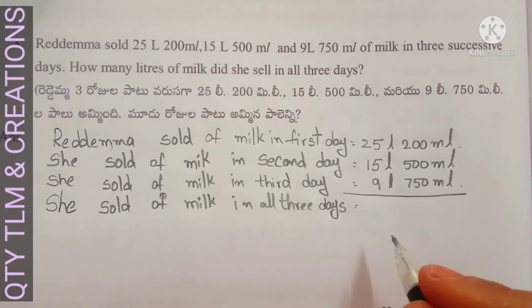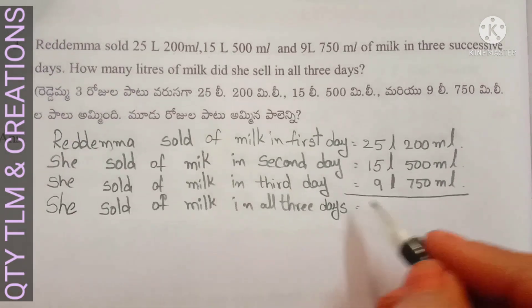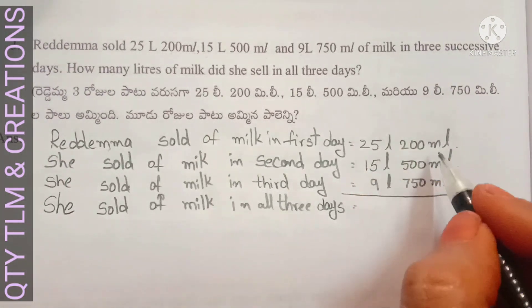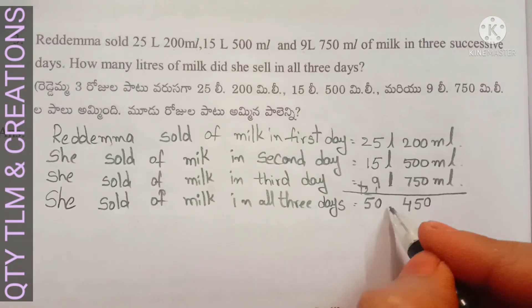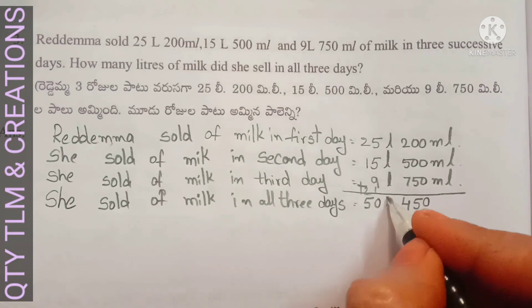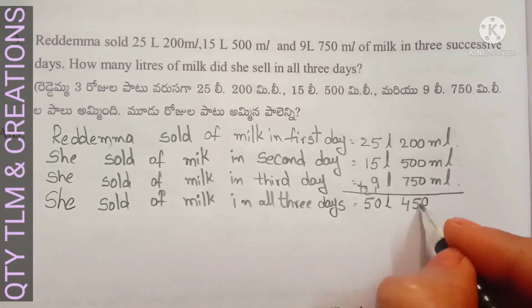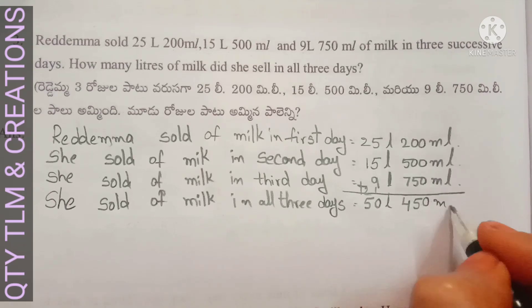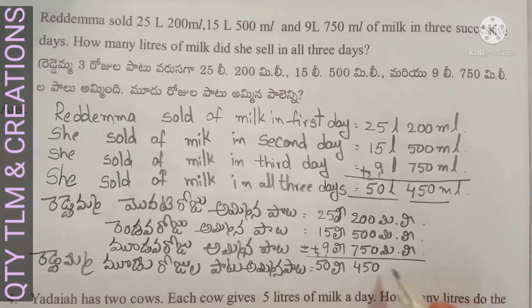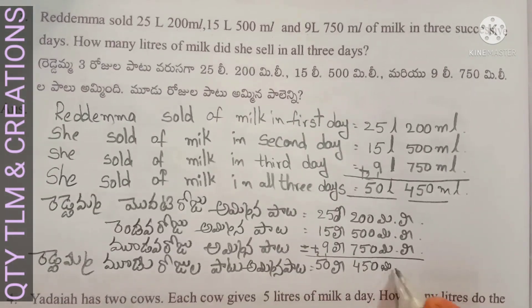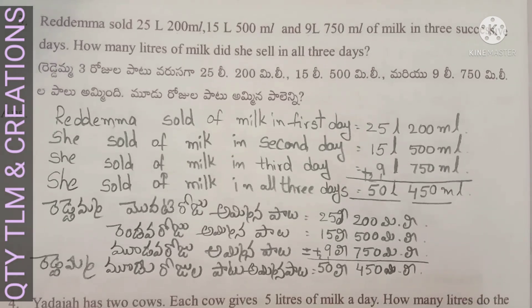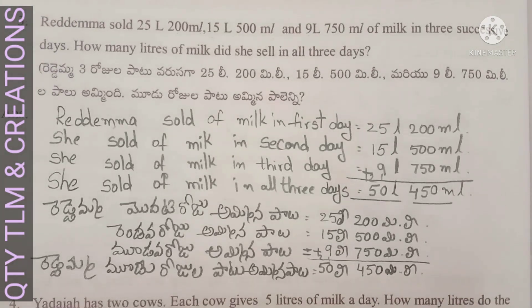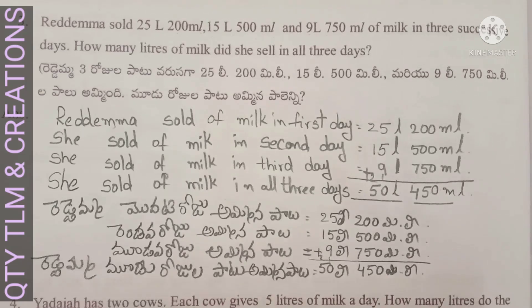Adding these liters and milliliters together, we get 50 liters 450 milliliters as the total milk sold by Reddamma over the three days.